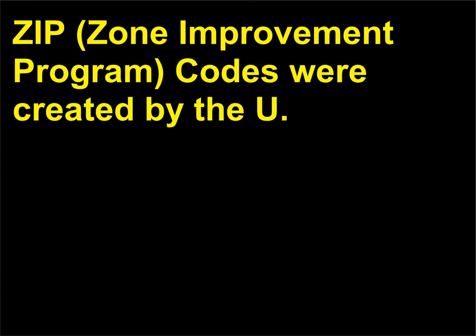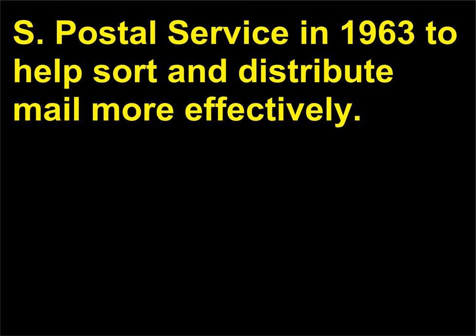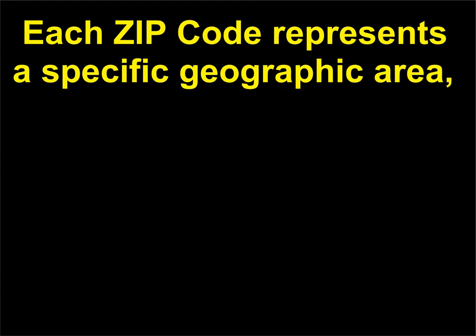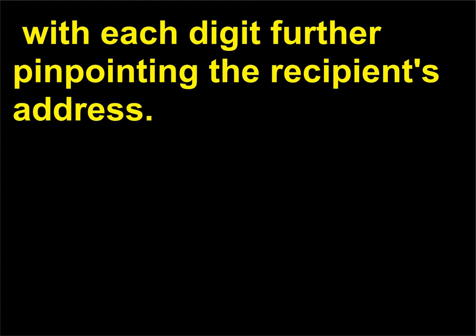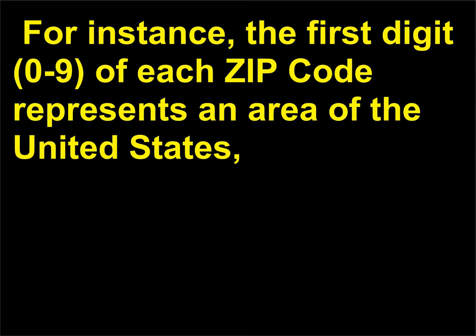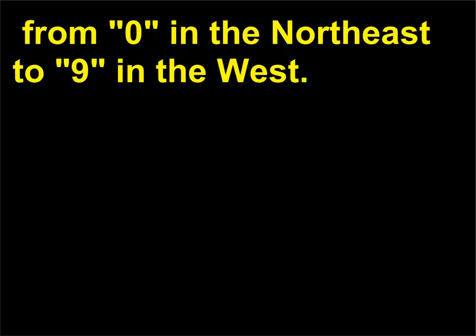Why do I need a ZIP code? ZIP, Zone Improvement Program, codes were created by the U.S. Postal Service in 1963 to help sort and distribute mail more effectively. Each ZIP code represents a specific geographic area, with each digit further pinpointing the recipient's address. For instance, the first digit, 0 to 9, of each ZIP code represents an area of the United States, from 0 in the northeast to 9 in the west.